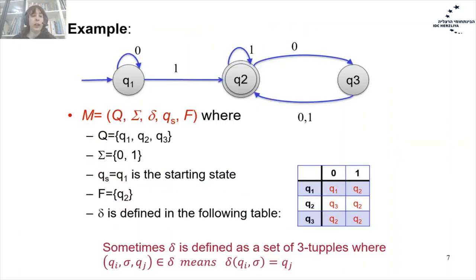In our previous example, we had the following graph representation of the automaton with three states. Therefore, the set Q was {Q1, Q2, Q3}. The alphabet sigma was {0, 1}. Q1 was the initial state, so the starting state QS equals Q1. We had only one accepting state, so the set F had only one element: Q2. The delta transition function was defined according to the following table.